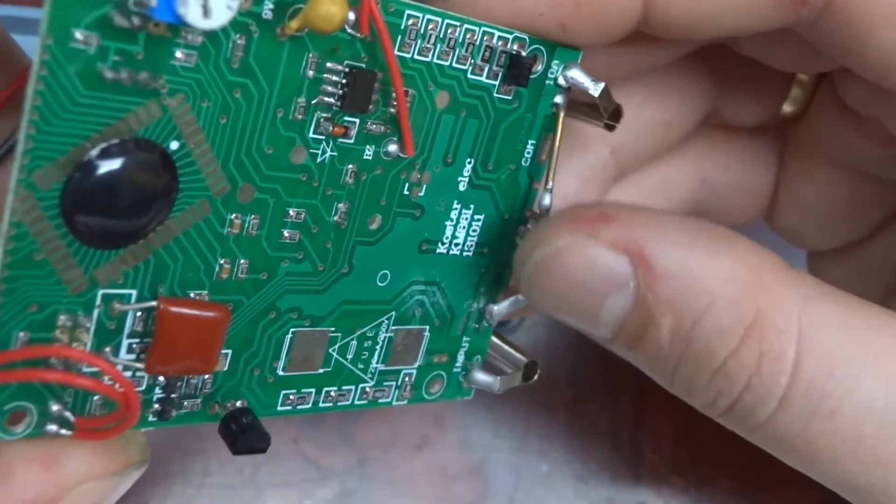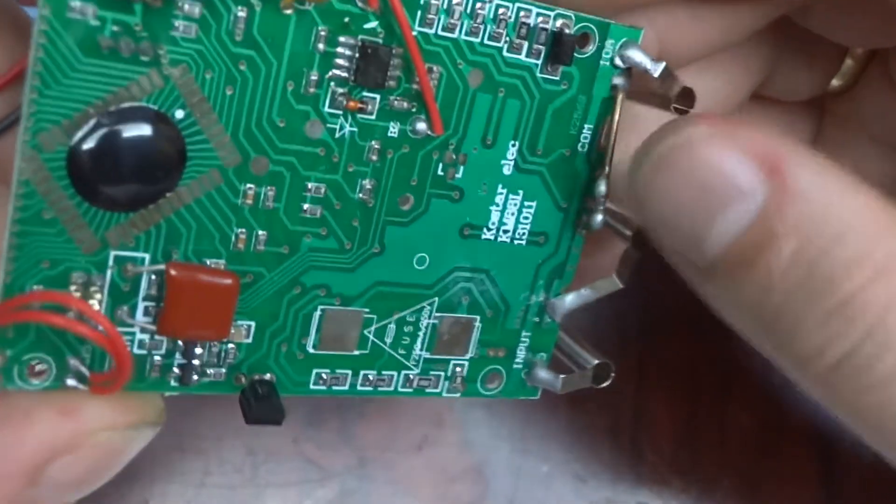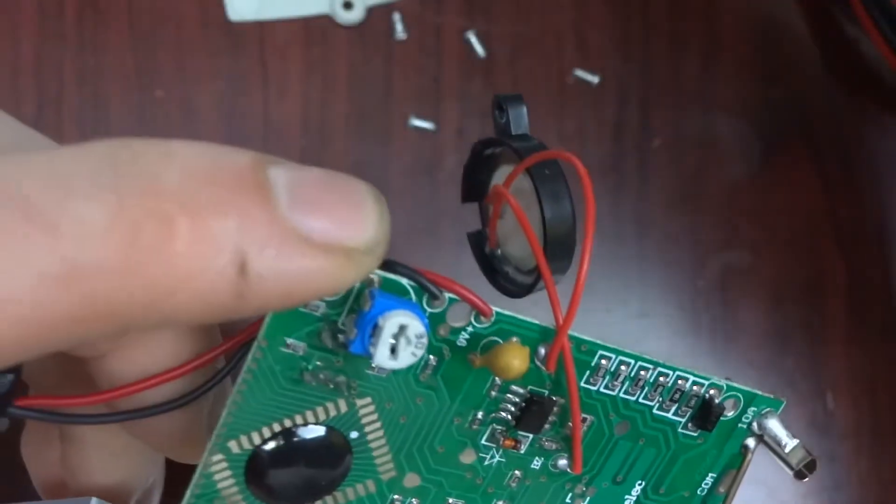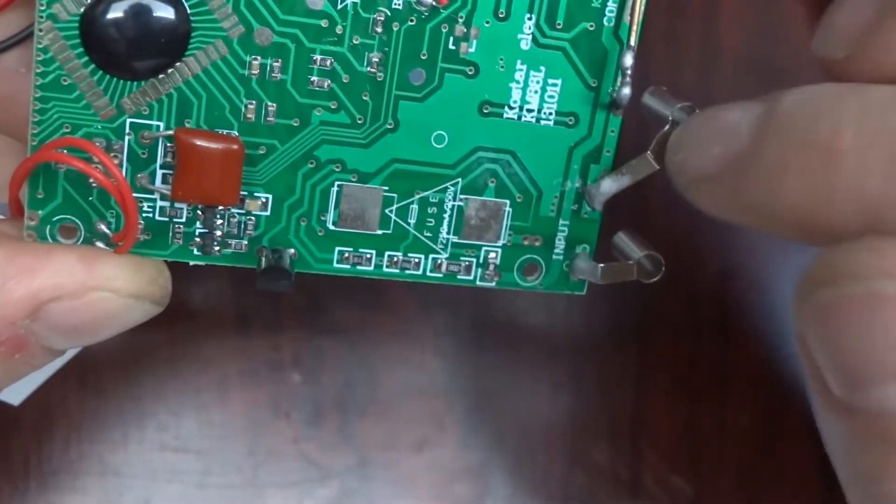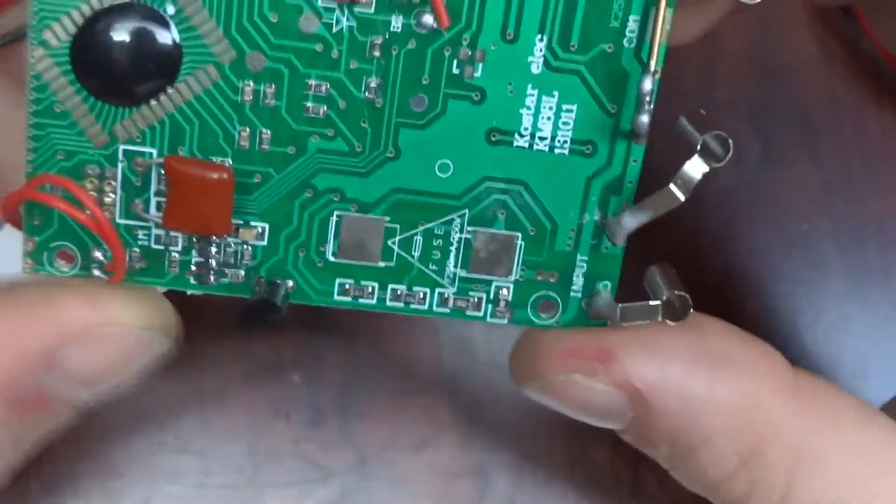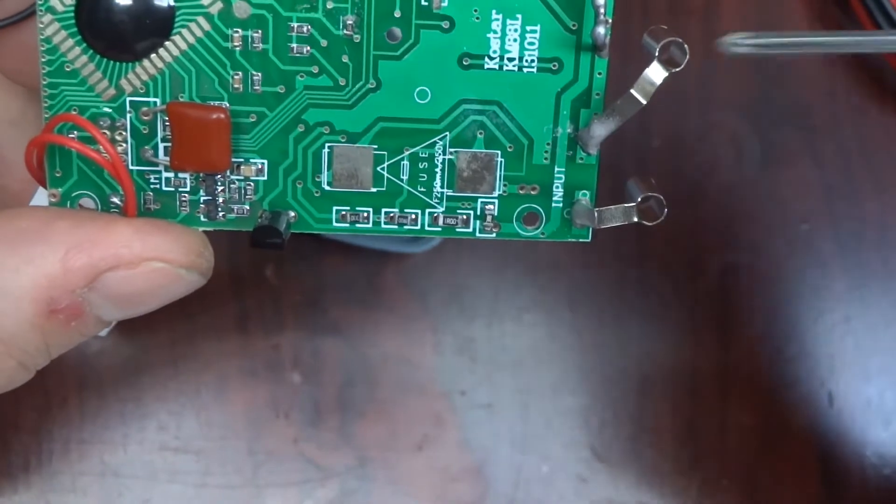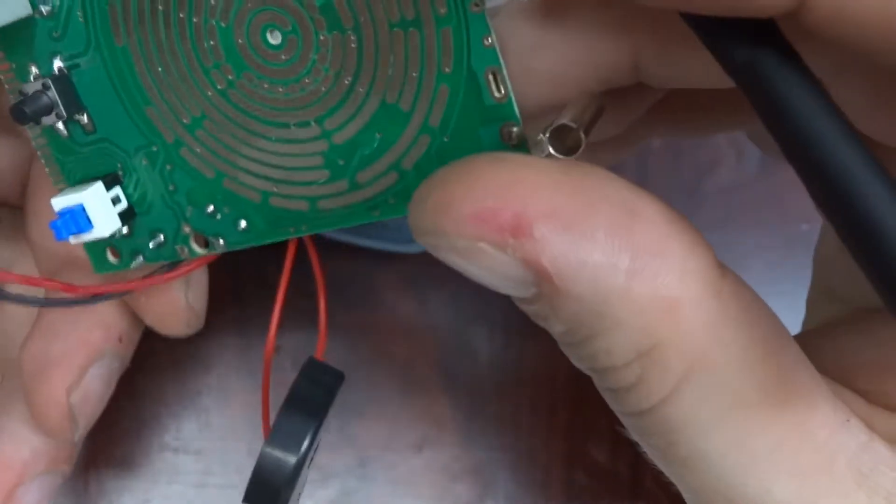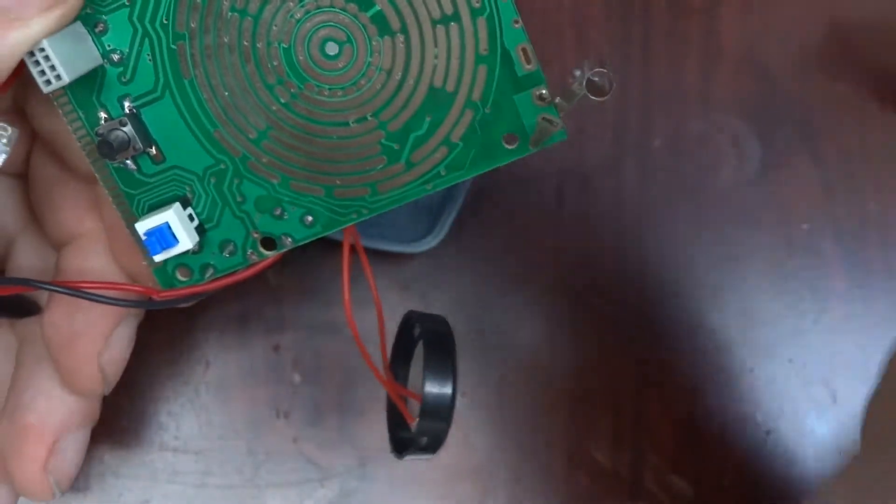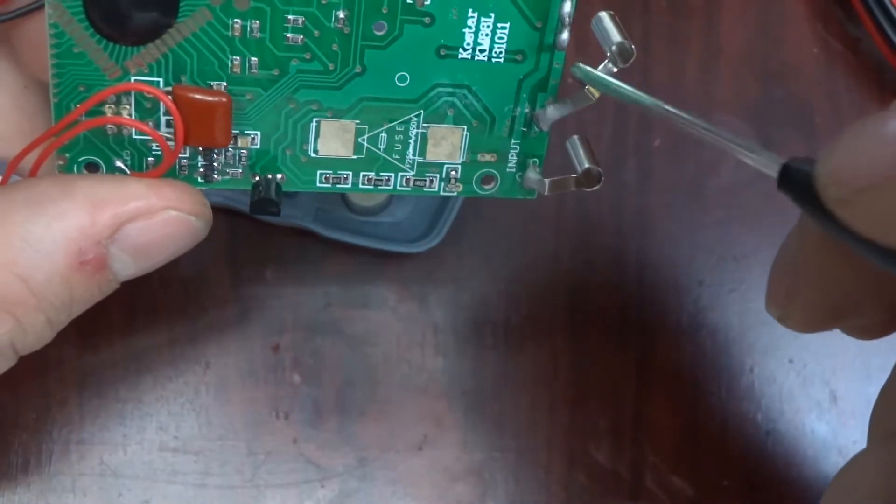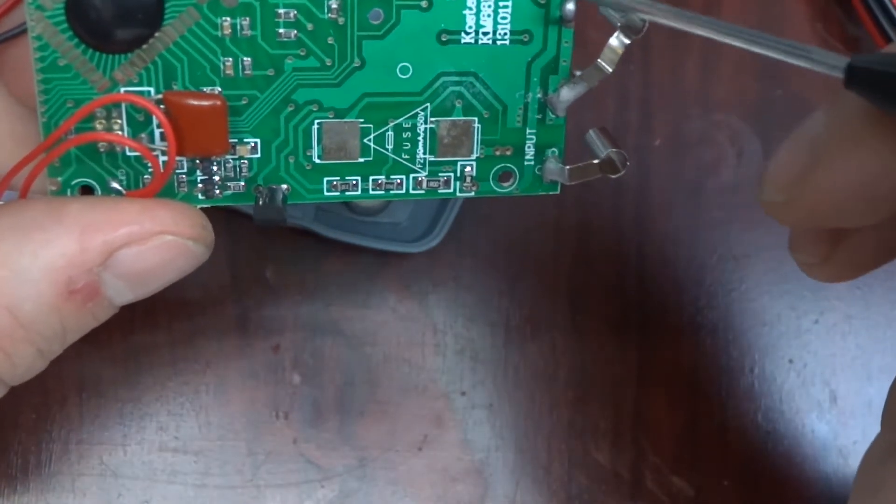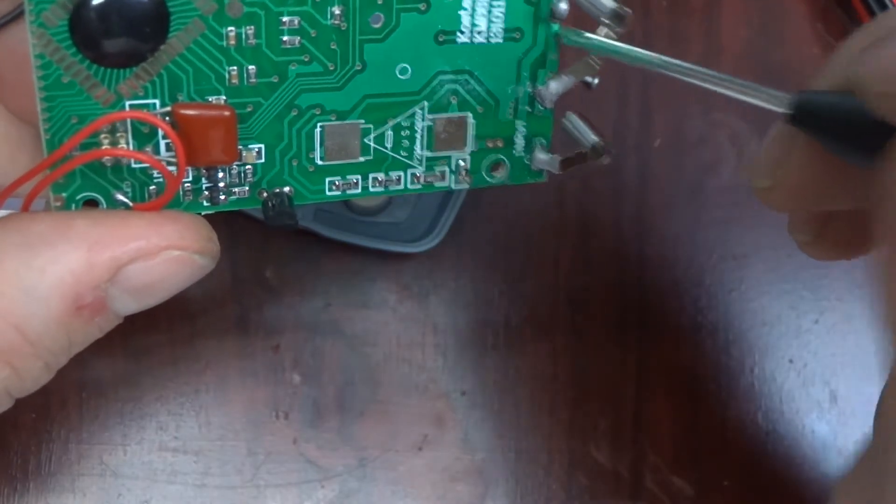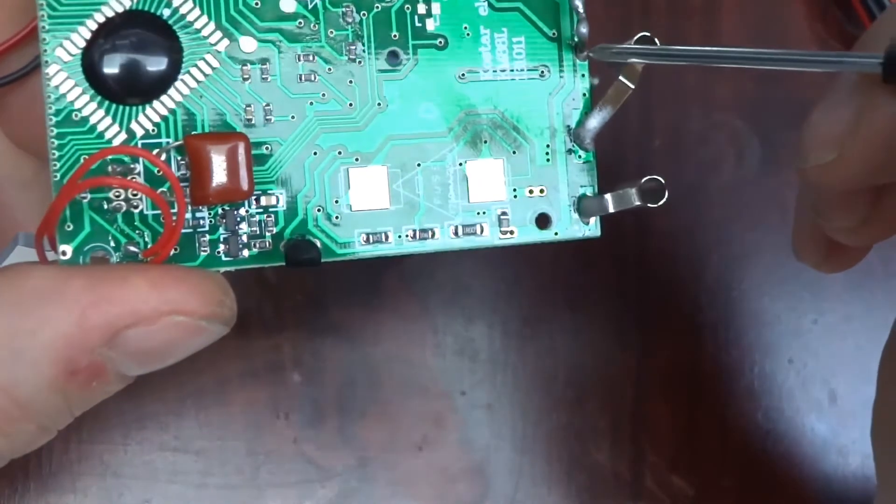This little wire here, this is the current shunt for measuring the 10 amps. The middle connector is common. When you're measuring 10 amps it will go through this track over here, which is also stitched up to the back track to increase the current capacity and decrease the resistance.